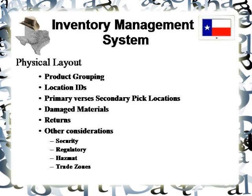Other considerations include your primary versus secondary pick locations, more commonly known as forward versus reserve pick faces. The idea is that you may have over a million SKUs in your database, but at any point in time — especially during seasonal changes — you're only going to have a few thousand that are actually active. You also need to keep in mind where your damaged materials will go, how to separate those from regular inventory, how to separate returns, because as some companies have found out the hard way, there are legal liabilities here.